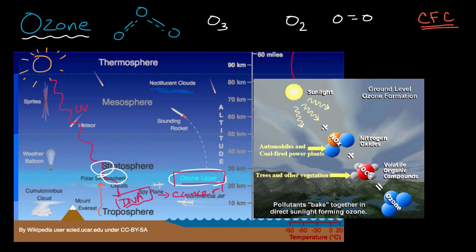To understand why it might form down there, we need to understand the role, once again, that we're playing. Nitrous oxides are formed from automobile exhaust and coal-fired power plants. When those in the presence of UV light and what's known as volatile organic compounds—which is just a fancy way of saying organic compounds that evaporate very easily, most of which are naturally produced—